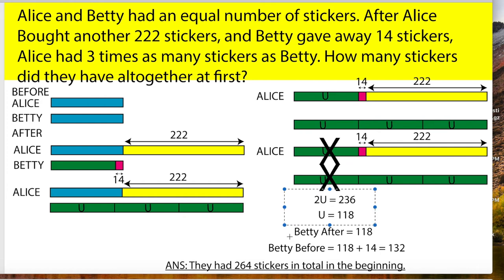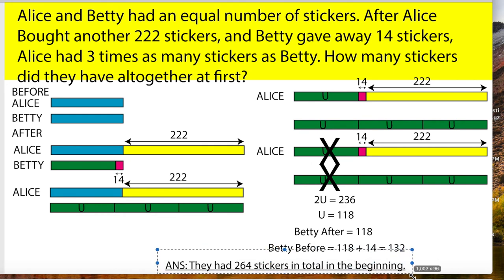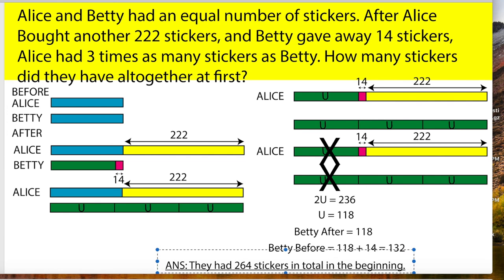So Betty after is 118. Betty before is 118 plus 14, which equals 132. But we're not done, because the question asks for the total stickers they had altogether at first, not just one of them. So you take 132 times 2, and you get 264. And that is how you do this question.